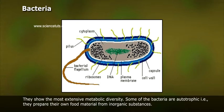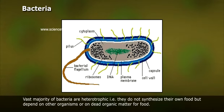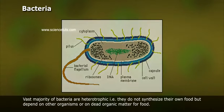They show the most extensive metabolic diversity. Some bacteria are autotrophic, that is, they prepare their own food material from inorganic substances. The vast majority of bacteria are heterotrophic, that is, they do not synthesize their own food but depend on other organisms or on dead organic matter for food.